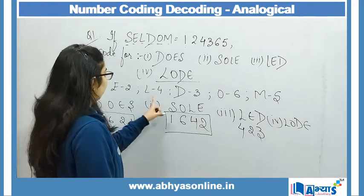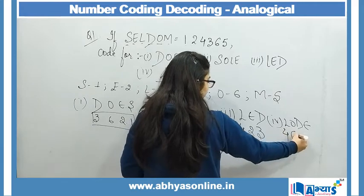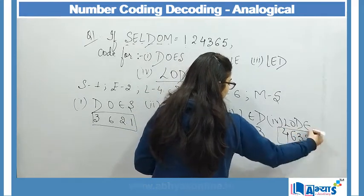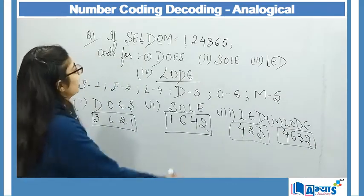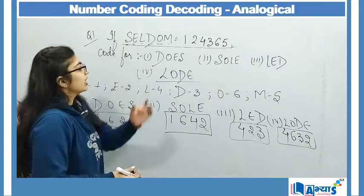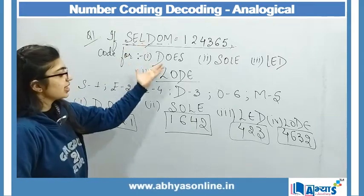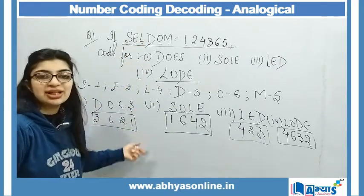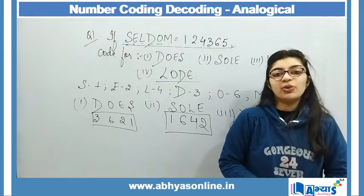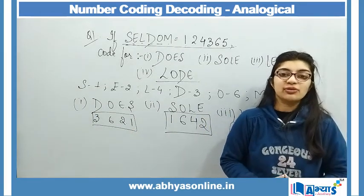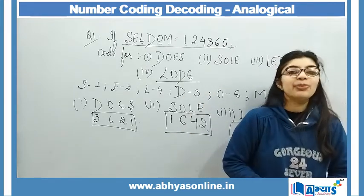L का corresponding code है 4, O के corresponding है 6, D के corresponding 3 है और E के corresponding 2 है। तो ये codes हमने derive कर लिए। कैसे derive किया? क्योंकि हमें SELDOM का code बताया हुआ था — SELDOM के अंदर से ही ये सारे words derived हुए हैं और इसलिए code भी SELDOM में से ही derived होगा। हर coding decoding का अपना logic है — हमें वो logic find out करना है जो applicable हो।